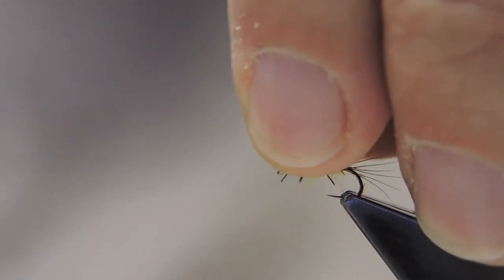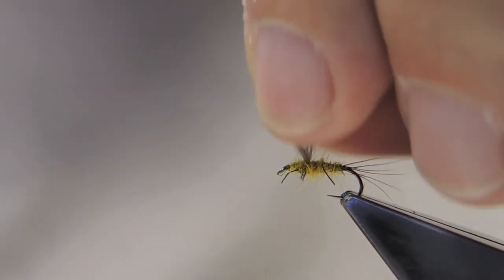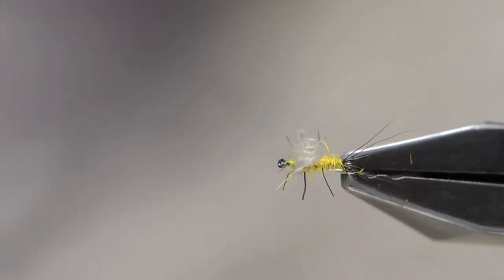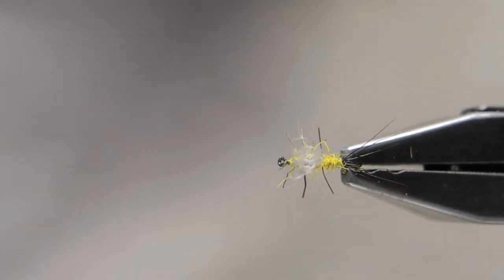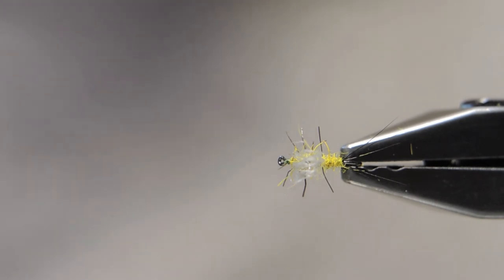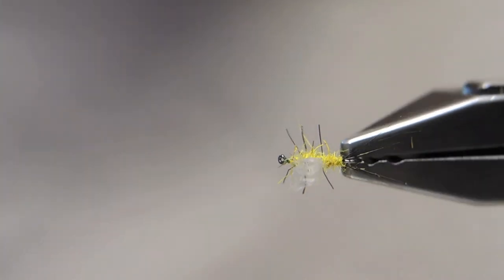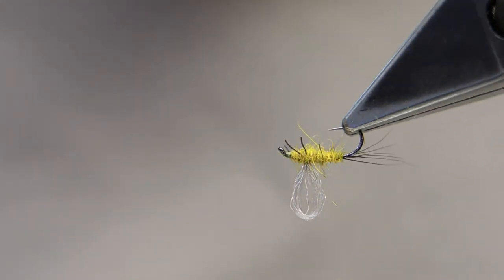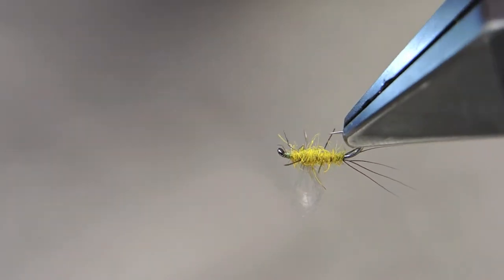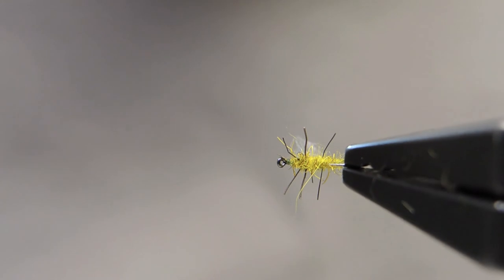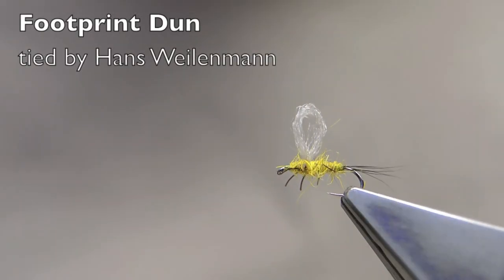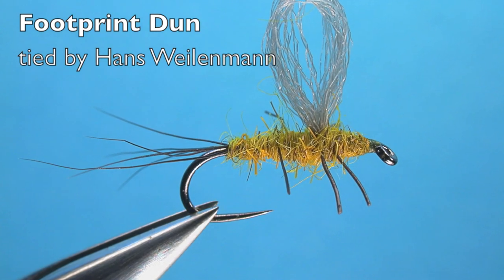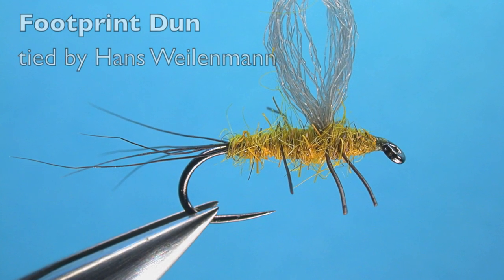And that completes the Footprint Dun. Six legs that aid in flotation, as well as the split tail, for this low riding, smooth water pattern. Thank you.